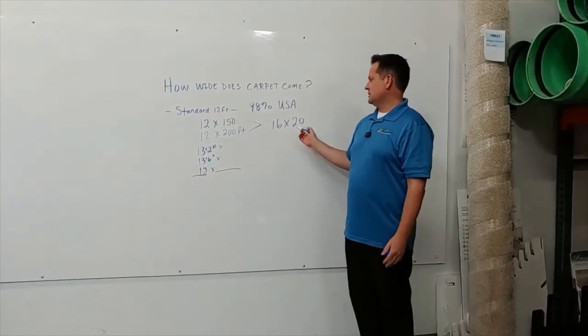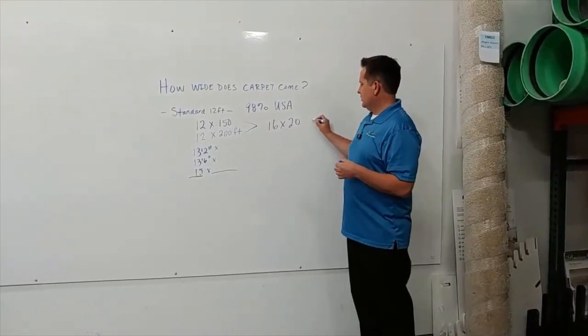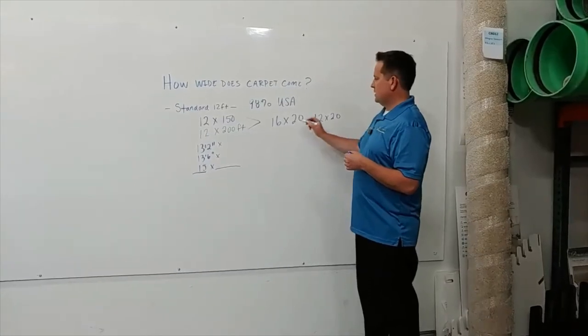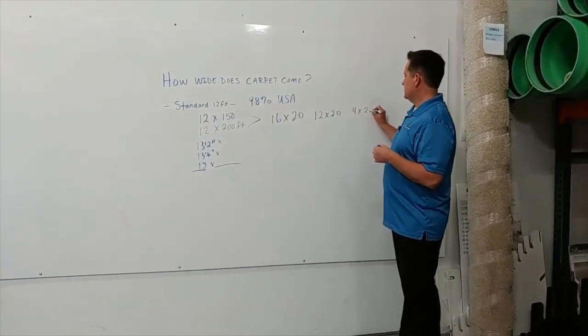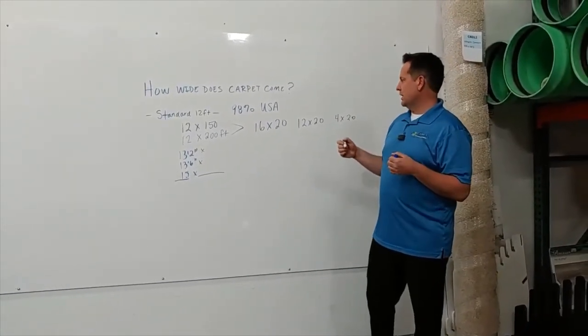In the case of this room here, just to combine thoughts, basically with carpet math you would need a 12 by 20, and then your leftover there is a 4 by 20. There's a couple ways around that, but basically you'd need seams to do that.